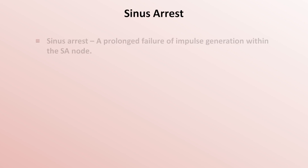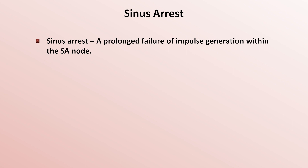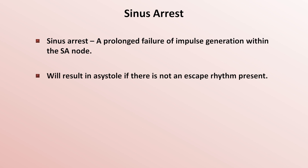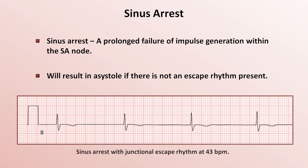A sinus arrest is when there is prolonged failure of impulse generation within the SA node — it's sort of like a sinus pause that lasts a really long time or is even permanent. There is no conventional cutoff for how long a sinus pause needs to be in order to be considered a sinus arrest. Sinus arrest can be very dangerous as it will result in asystole if there is not an escape rhythm present. In this particular example, we have an apparent sinus arrest with a junctional escape rhythm in the low 40s.